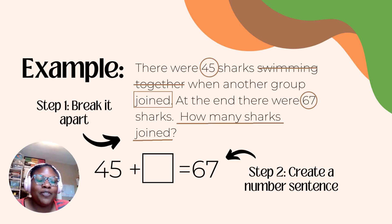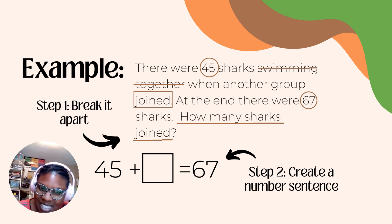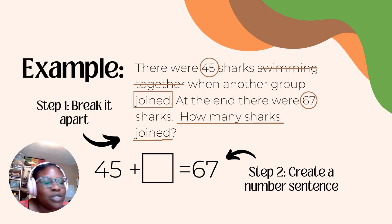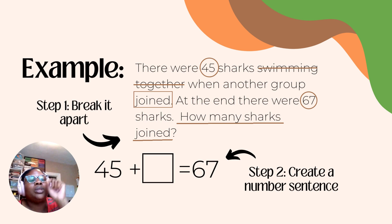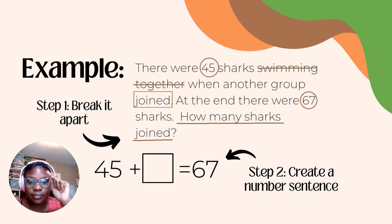I hope you paused the video and figured out the previous example. Now let's move on to the second example. There were 45 sharks swimming together. When another group joined, at the end there were 67 sharks. How many sharks joined? So step one, we're breaking it apart — we circled our numbers, eliminated the extra information, put a box around the keywords, and underlined the question. For step two, we create a number sentence: 45 plus an unknown box equals 67.